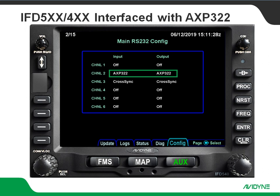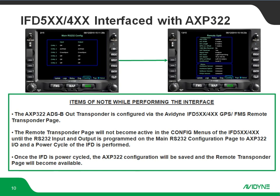Next, we're going to jump into the configuration settings. On our main RS-232 config page, we're going to set that for AXP322 in and out. The rest of the configurations specific to the transponder are going to take place on the remote transponder config page. Keep in mind: when you set the RS-232 in and out to AXP322, you will likely need to do a power cycle on the IFD so it understands there's supposed to be an AXP322 there before the remote transponder configuration page will pop up. If it's not populating, it's probably because we just turned on that RS-232 line and it doesn't know yet, so you might have to do a power cycle.